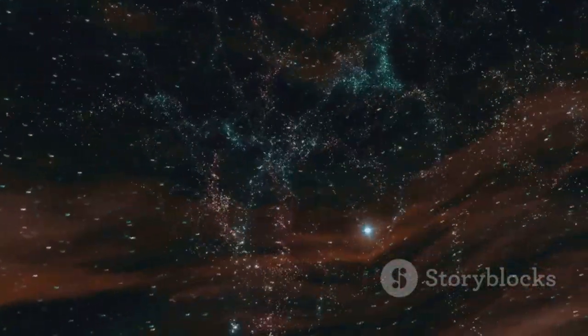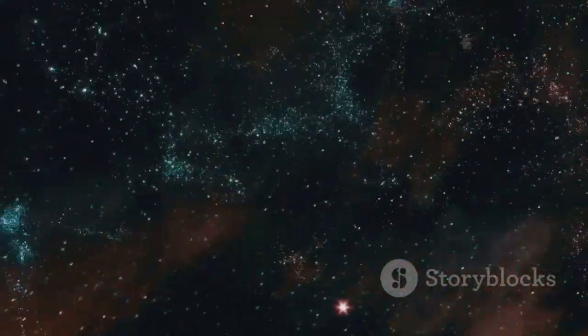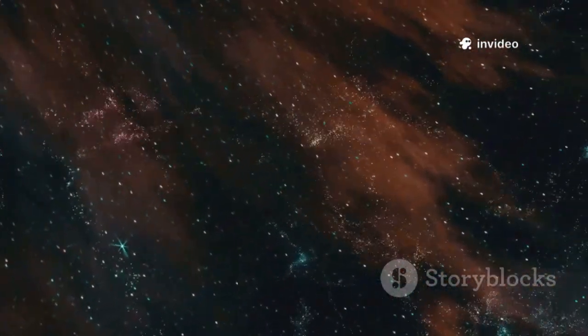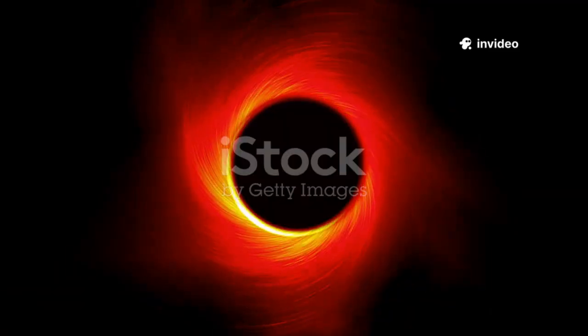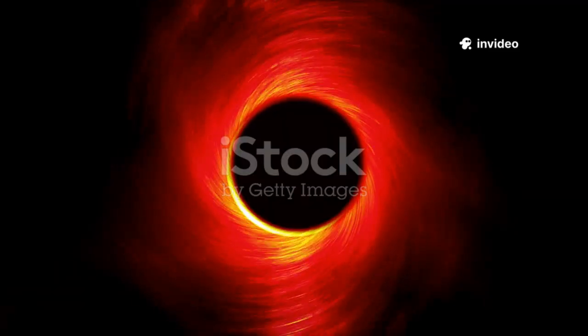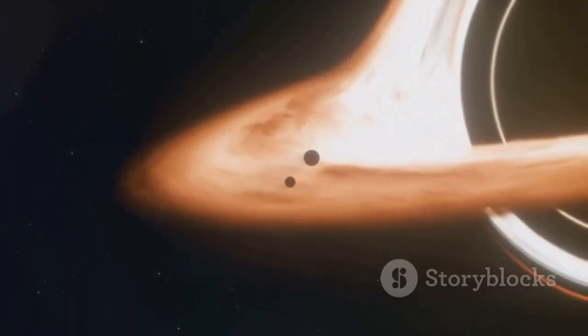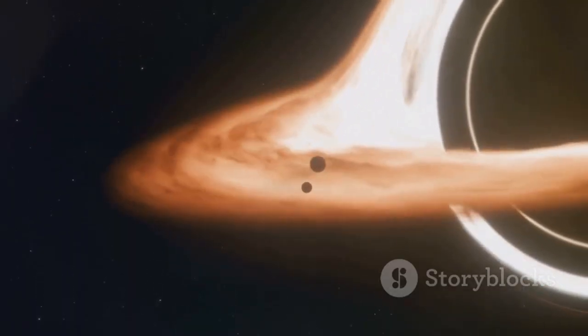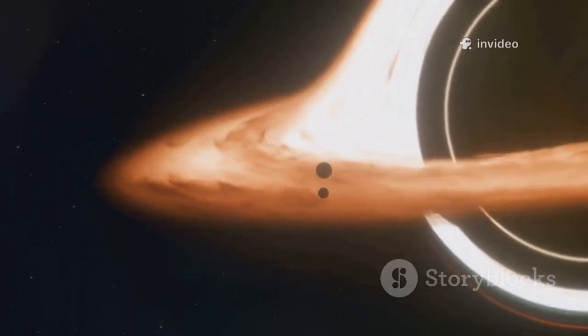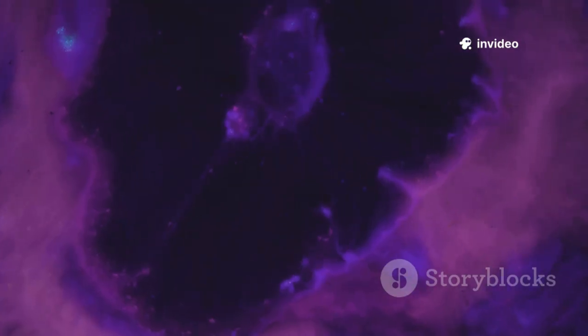To understand the theory of a universe within a black hole, it's important to simplify some complex concepts. The event horizon of a black hole is the point beyond which nothing can escape its gravitational pull. In black hole cosmology, this boundary represents the edge of our universe, separating it from the larger parent universe.